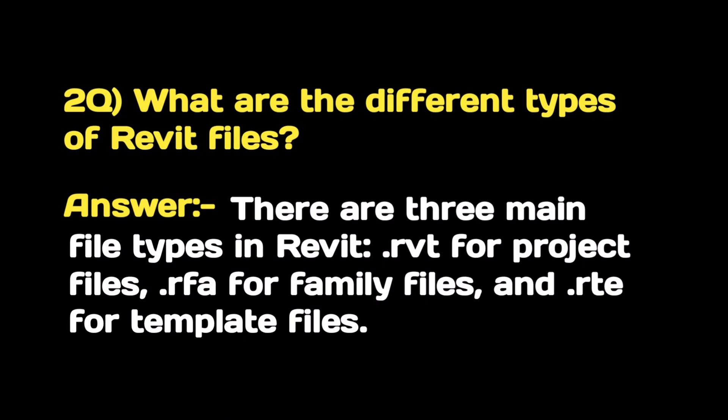What are the different types of Revit files? There are three main file types in Revit: .rvt for project files, .rfa for family files, and .rte for template files.